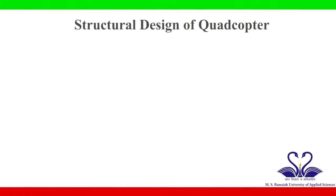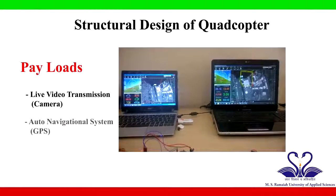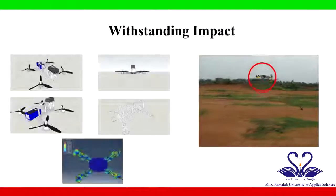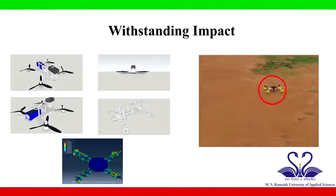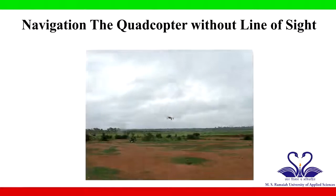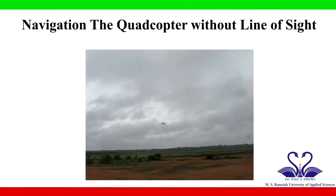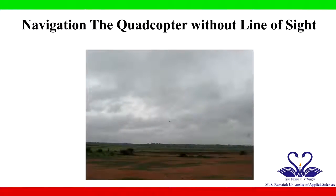Structural design of the quadcopter was carried out by incorporating provisions to carry payloads such as a live video transmission system and autonomous navigational system. The structure was optimized to withstand impacts of various nature. The live video transmission system enables a pilot on the ground to navigate the quadcopter with a first-person view.